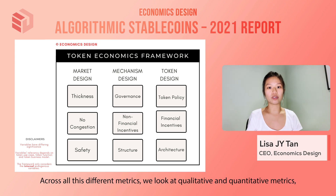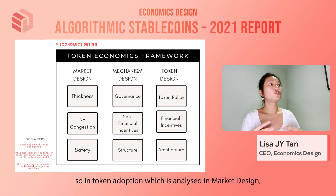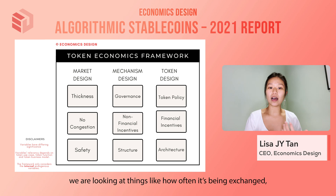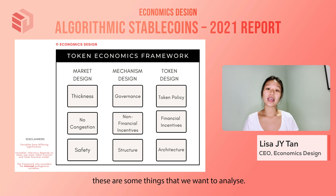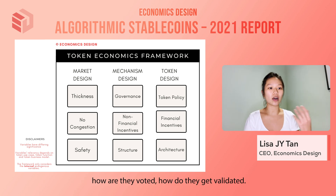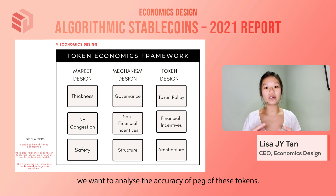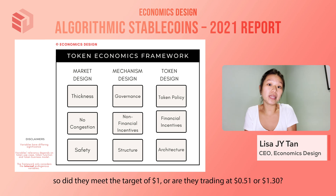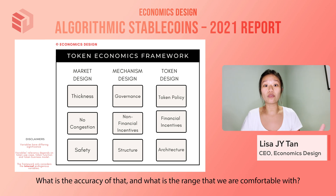Across all these different metrics, we look at both qualitative and quantitative data. The four main metrics are: market adoption, analyzed under market design, looking at how often tokens are exchanged, how much is held in wallets, how much is circulating; governance, under mechanism design, examining improvement proposals, how they are voted on and validated; peg accuracy, looking at whether tokens meet the $1 target or are trading at $0.51 or $1.30 and what range we are comfortable with, such as $1 plus or minus 5% or 1%.